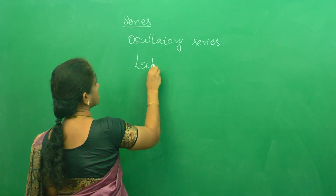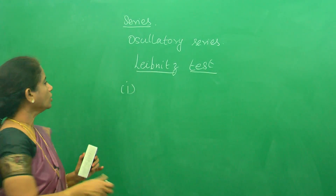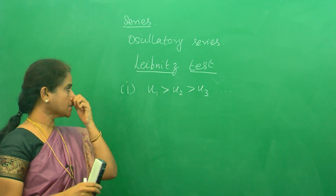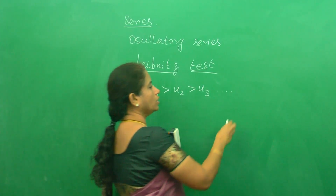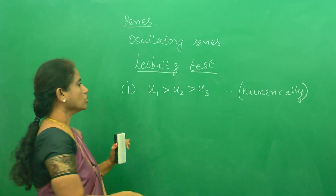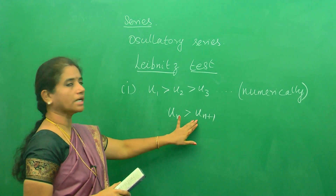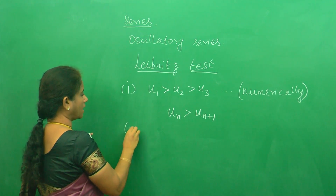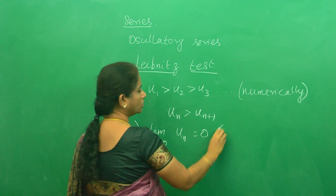For this we are going to use Leibniz test. The test has two steps. The first step is you are supposed to check that u1 is greater than u2, greater than u3, etc. — but only numerically. Please be careful, because there is no meaning in comparing when one term is positive and one term is negative. So numerically, we compare u1, u2, etc. Generally we check that un is greater than un+1. Once this is satisfied — numerically, which is very important — the second step is: calculate the limit as n tends to infinity of un. If this is 0, the series is convergent.